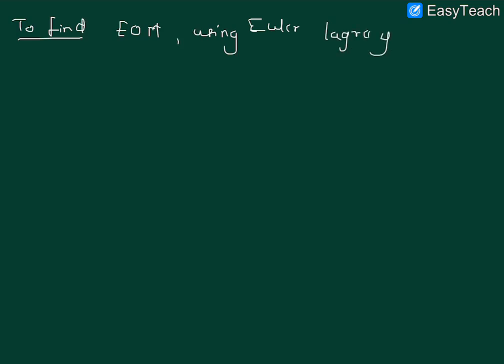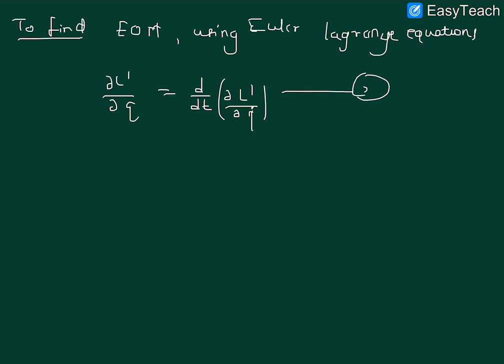Now we apply the Euler-Lagrange equations. According to the Euler-Lagrange equation, ∂L'/∂q equals d/dt of ∂L'/∂q̇. This is just the standard form of the Euler-Lagrange equation with the ∂L'/∂q term shifted to the other side. Here Q belongs to X and Y as the general coordinates.